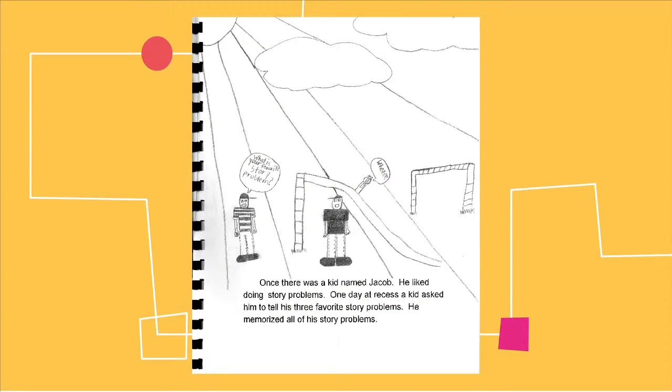Once there was a kid named Jacob. He liked doing story problems. One day at recess a kid asked him to tell his three favorite story problems. He memorized all of his story problems.